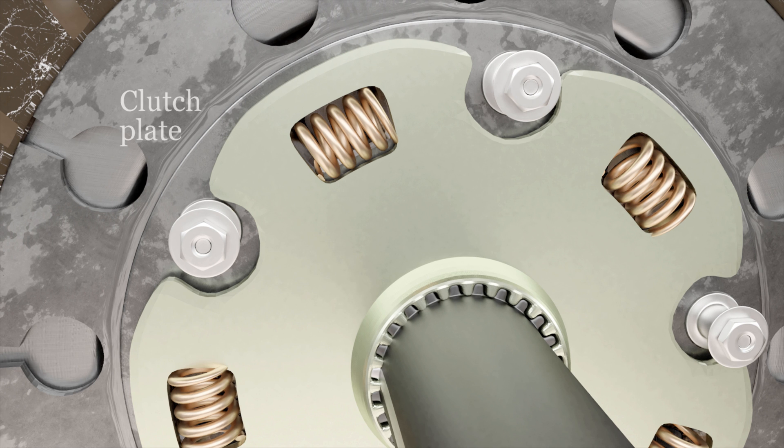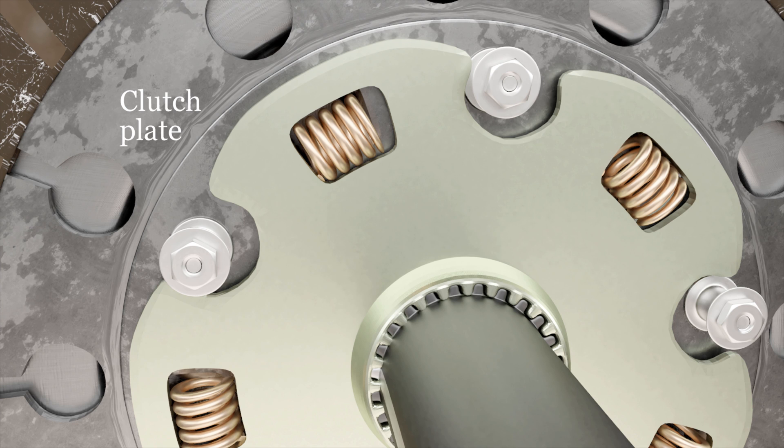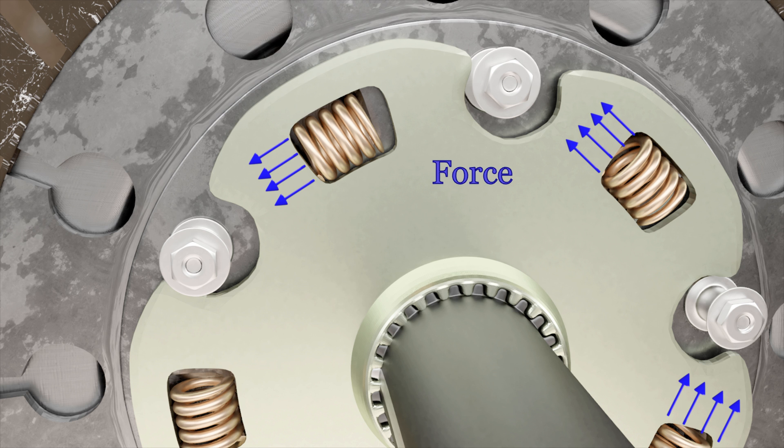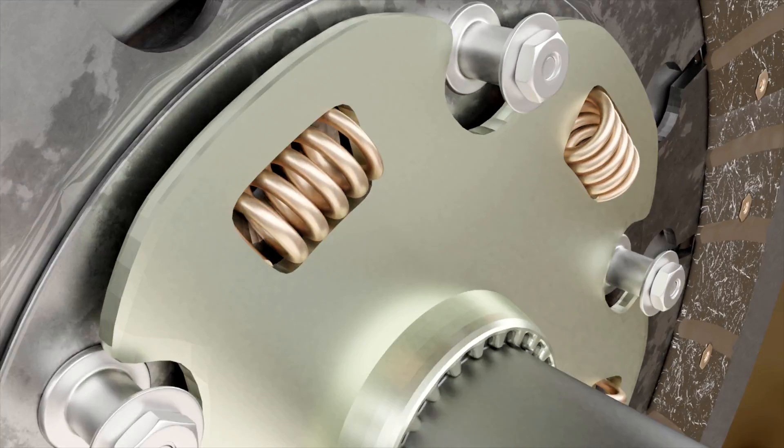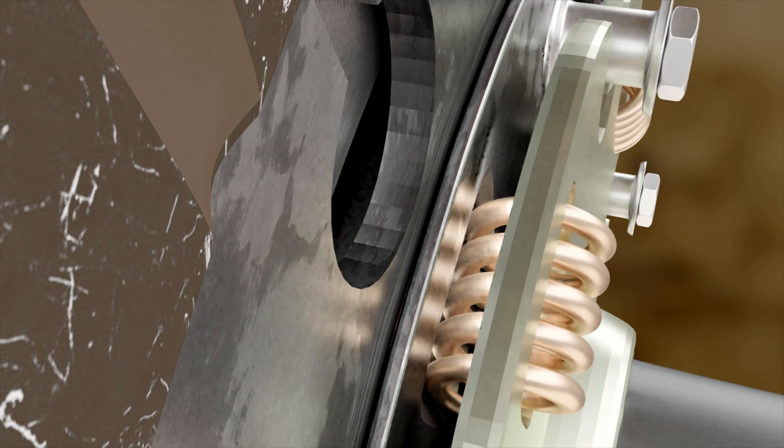Thus, when the clutch is engaged, the rotation of the clutch plate causes compression of this torsional spring against the hub. Then these springs force the hub to rotate and thus power is transmitted in a smooth way to the gearbox.